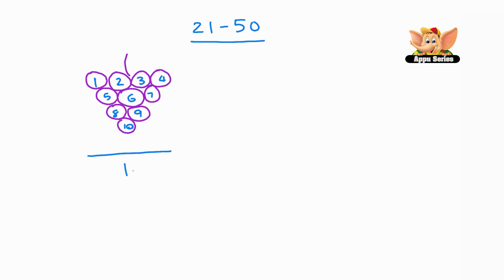That means these grapes are 1 ten. Now, let me draw 3 single grapes: 1, 2, 3. Let us write this as 3. Okay, so we have 3 grapes here, which means 3 ones.